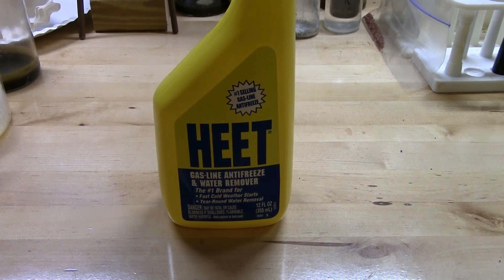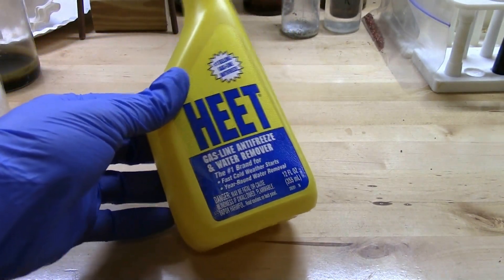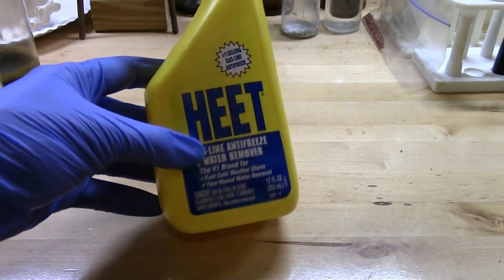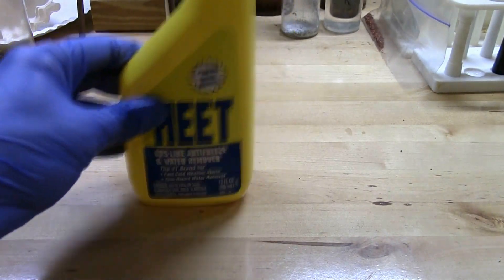So methanol I bought from the hardware store. It says Heat, the blue one. They make a red one too which is isoheat and that's isopropanol, rubbing alcohol. That's not gonna work. We want the blue one. So this is methanol.